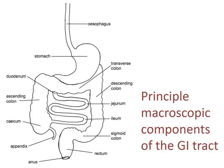The gastrointestinal tract — or GI tract, or gut — is a single tube running from the mouth all the way to the anus. The old-fashioned name for it is the alimentary canal. The digestive system consists of the organs composing the GI tract itself, as well as the accessory organs of digestion, which produce and secrete fluids and enzymes essential for digestive processes. Different sections of the GI tract have different properties and lumen diameters, allowing for specific functions.